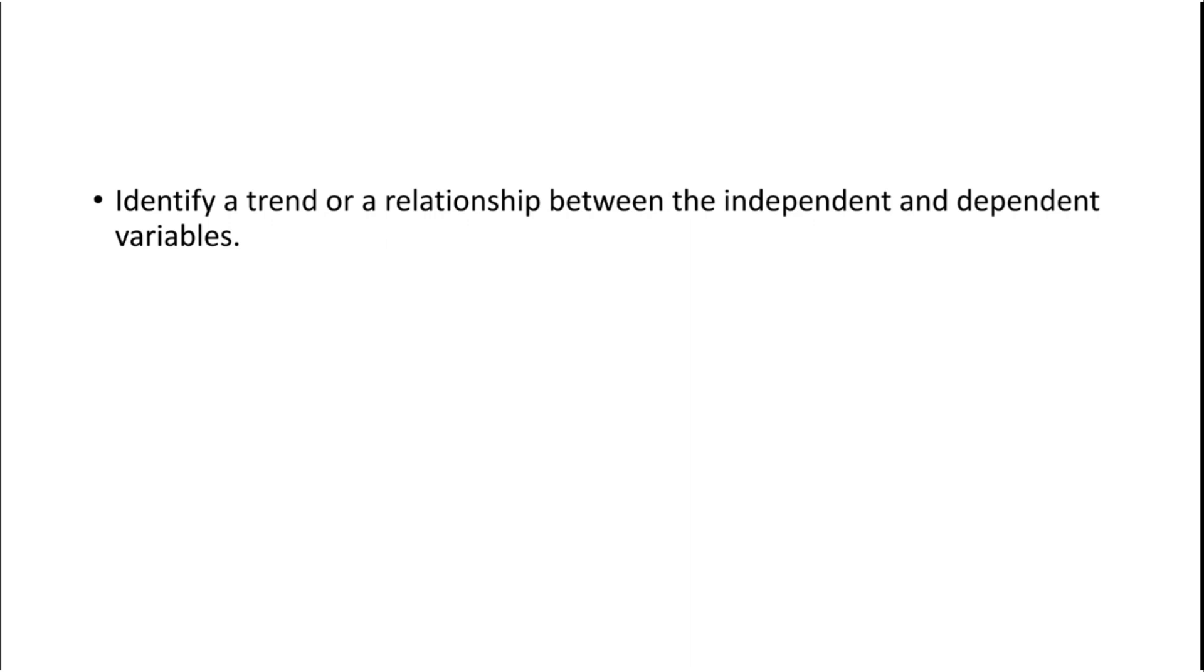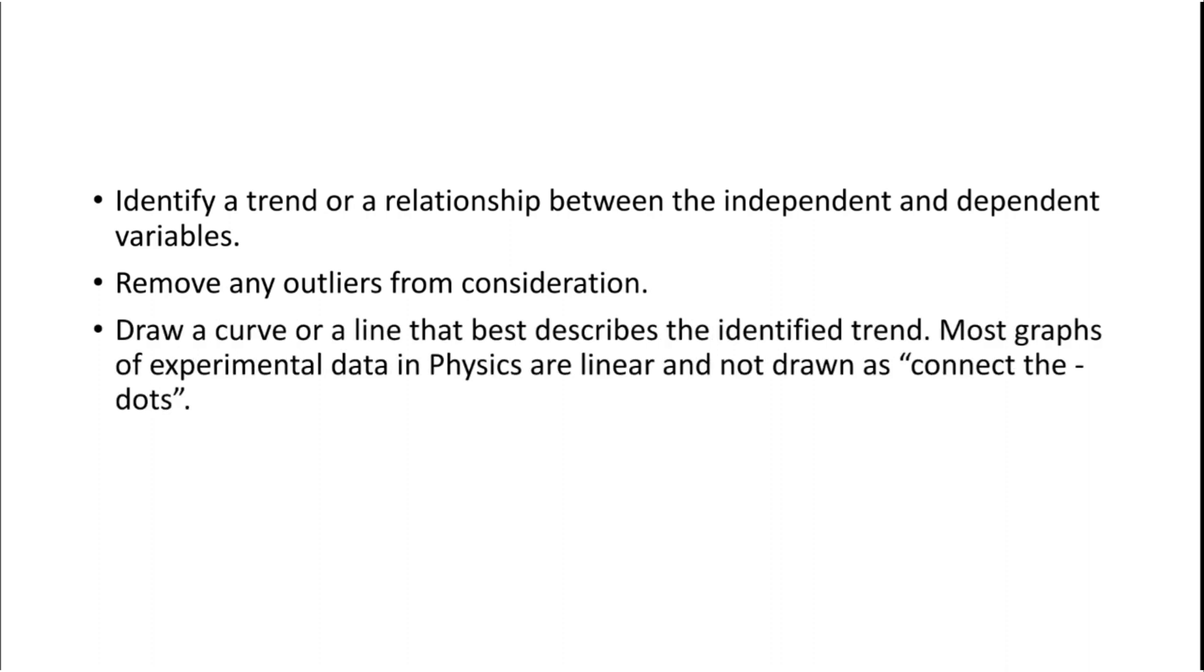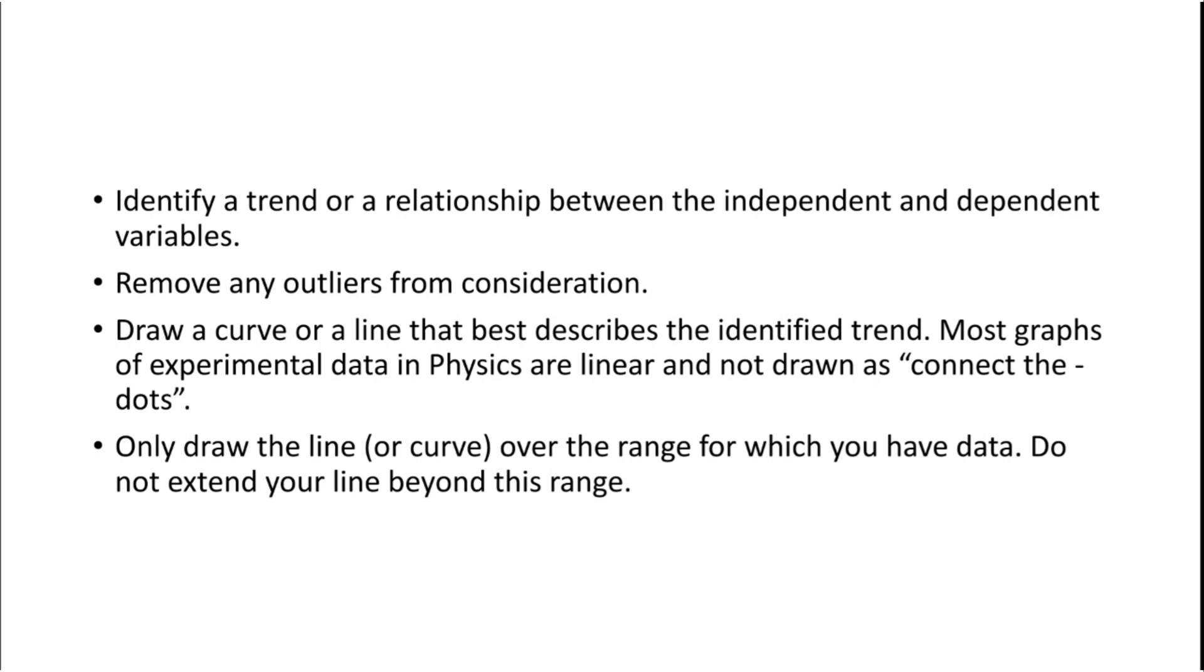Remove any outliers from consideration. Outliers means the points which are not coming in the trend of the graph. We say these points as anomalous points, so we can avoid those points to bring in the line of best fit. Draw a curve or a line that best describes the identified trend. Most graphs of experimental data in physics are linear and not drawn as connect the dots. Only draw the line over the range for which you have data.